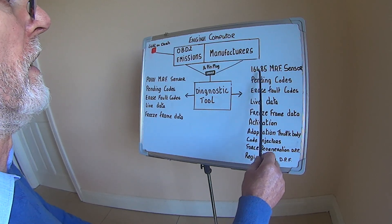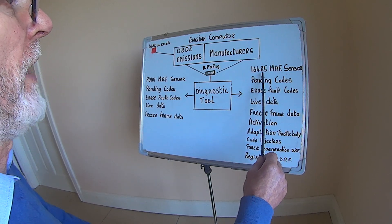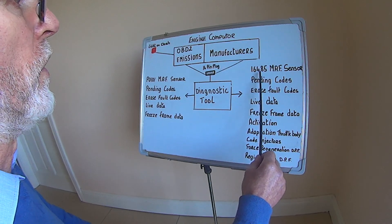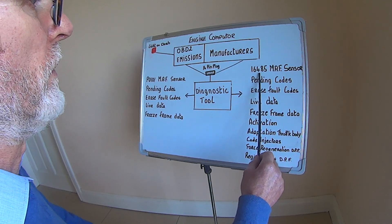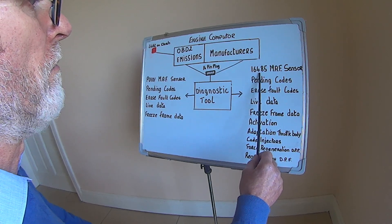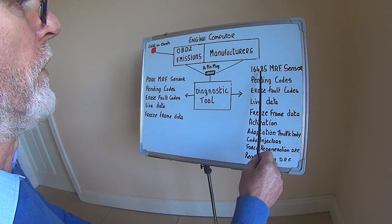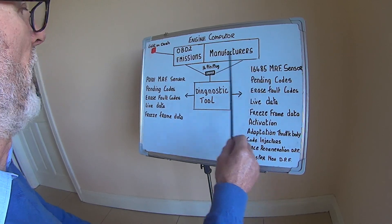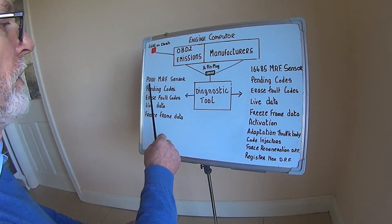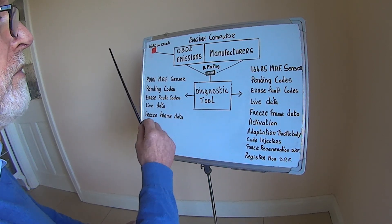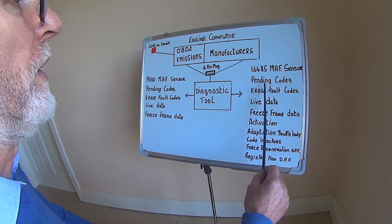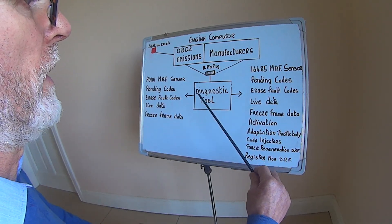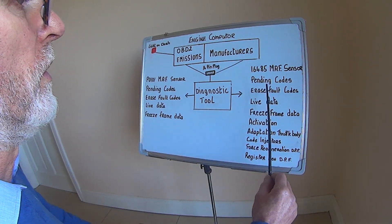Now this code here is a manufacturer's code, so if you go to a different manufacturer, you will have a different code. If you're doing research, go back to the P code and do your research with the P code. Pending codes — if you don't find it on this side of the computer, you'll find it in OBD2.